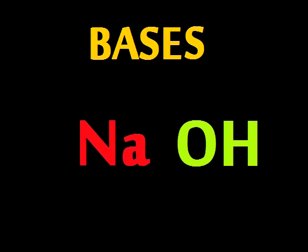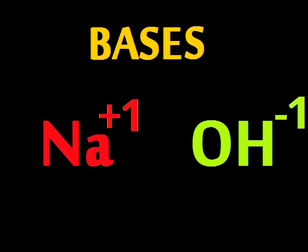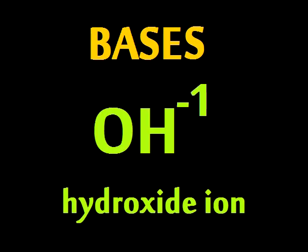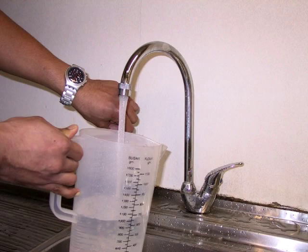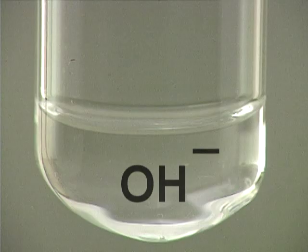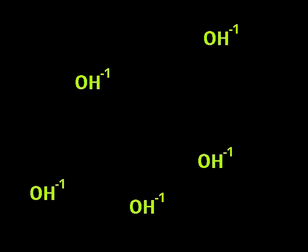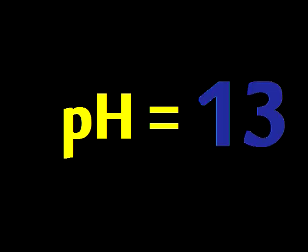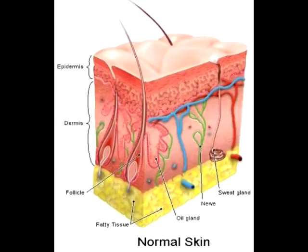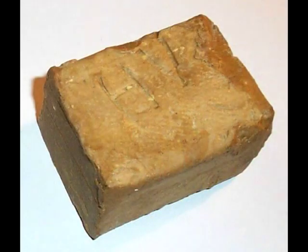Bases yield hydroxide — OH⁻ is how we ride. When dissolved in water and disappear from sight, the more hydroxide ions, the higher pH slopes. The more slippery it feels as it turns your skin into soap.